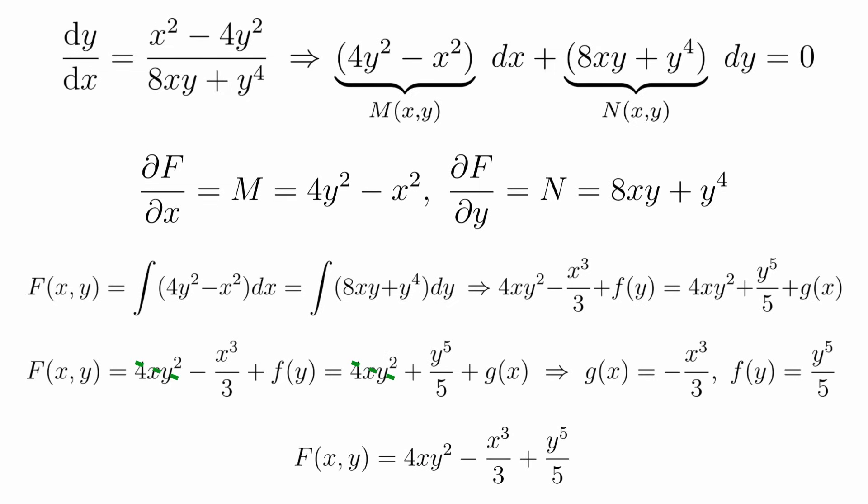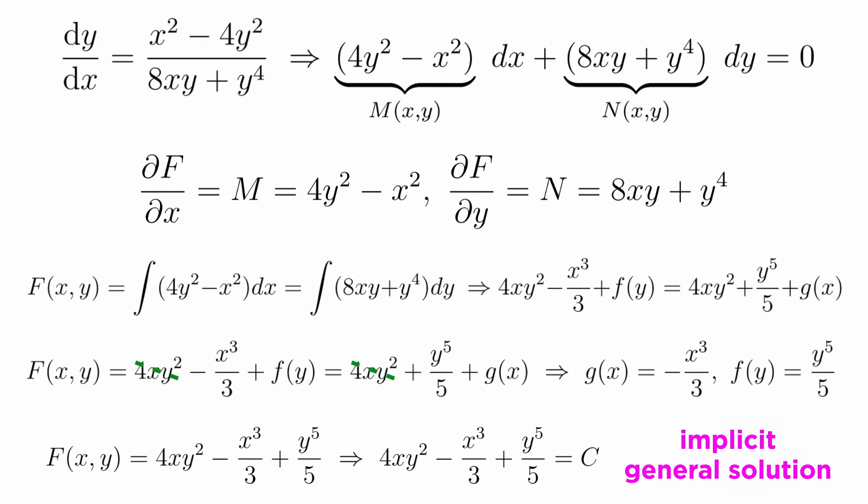And we can now see that the two sides are indeed the same. We have found our function f(x,y). It will be equal to 4xy² - x³/3 + y⁵/5. What this means is that the equations of all the contour lines of this multivariable function f(x,y) will satisfy our differential equation. So we can just set f(x,y) equal to any arbitrary constant c, and we will have our implicit general solution to this exact differential equation: 4xy² - x³/3 + y⁵/5 = c.